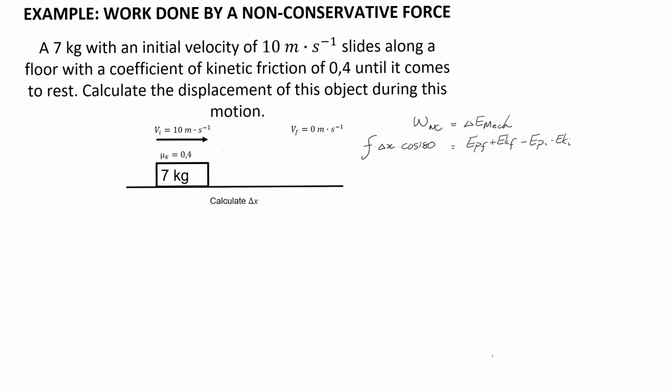We would start here by drawing a free body diagram for this object that shows that there is a force of gravity pulling the object downward. The object is on a surface, therefore there is a normal force acting upward from the surface, and the object is moving to the right so the friction force acts to the left to oppose the motion.